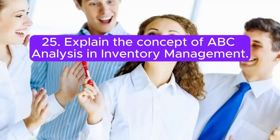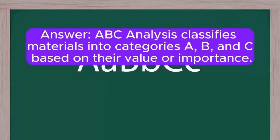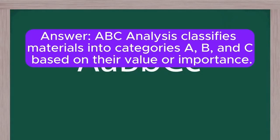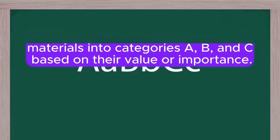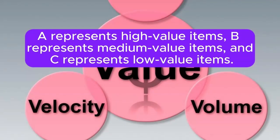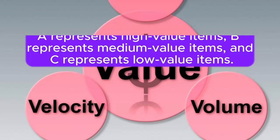Question 25: Explain the concept of ABC analysis in inventory management. Answer: ABC analysis classifies materials into categories A, B, and C based on their value or importance. A represents high-value items, B represents medium-value items, and C represents low-value items.